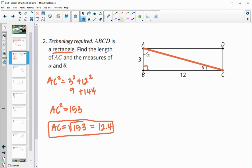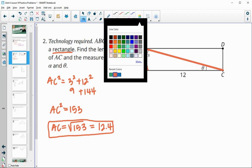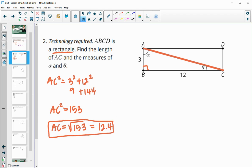You can either leave it as square root of 153 or you can do a decimal of 12.4. Then we need to find the measure of these angles. I'm going to find theta first. I'm going to label the sides based on this angle. Across from the theta is the 3, so this is my opposite side. The 12 is next to it, so the 12 is the adjacent side.